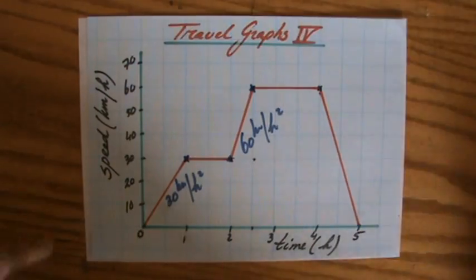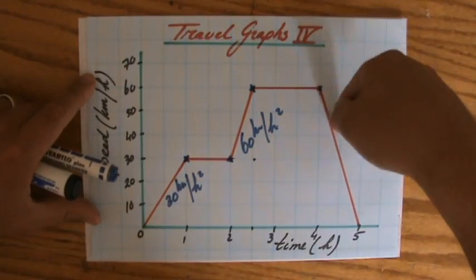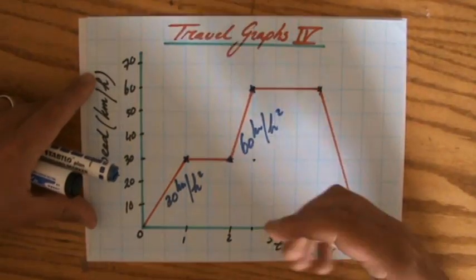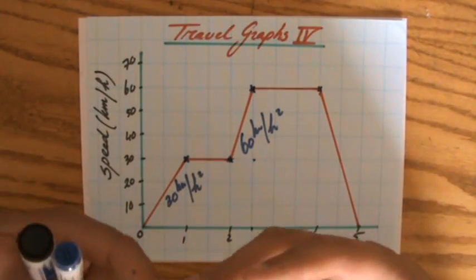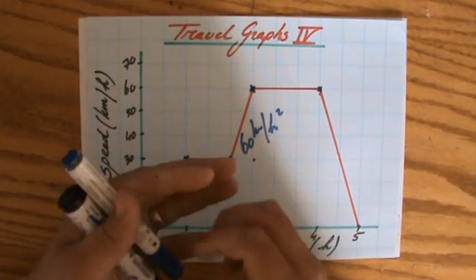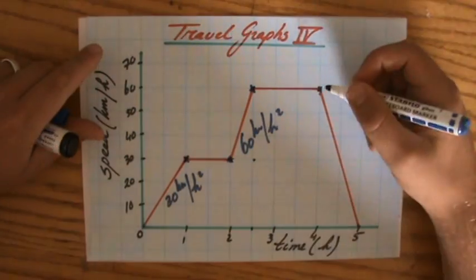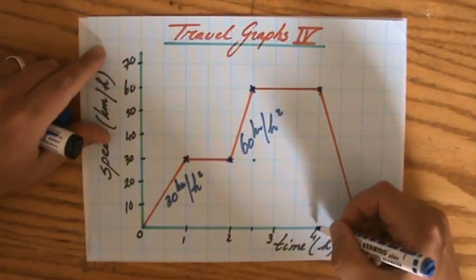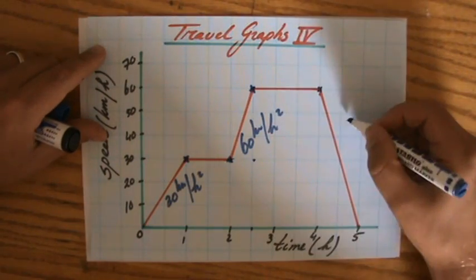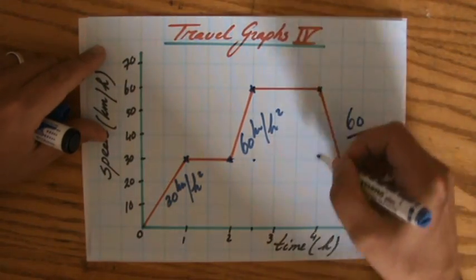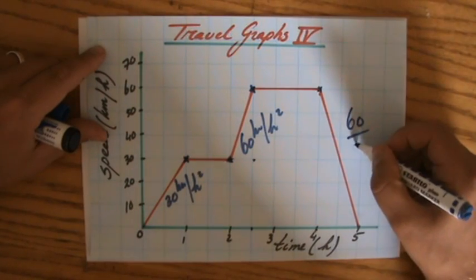What is the rate of deceleration? Again, you have to find a gradient, a negative gradient, because deceleration is like a negative acceleration. So we are going to find the gradient, the vertical difference is 60 over the horizontal difference from four to five, which is one.